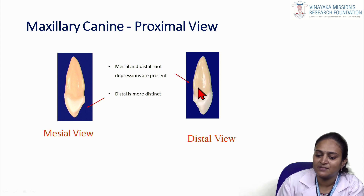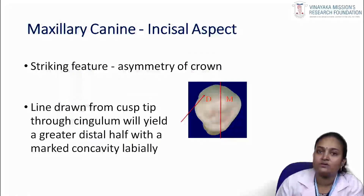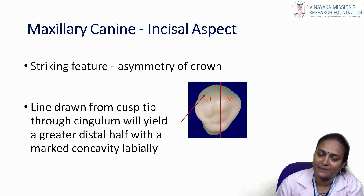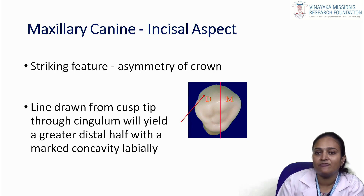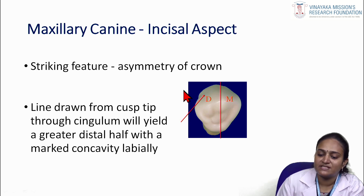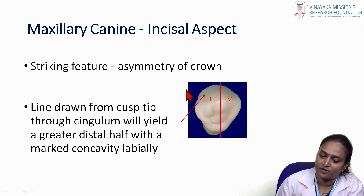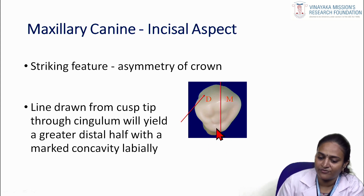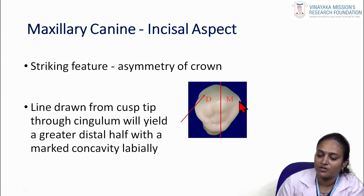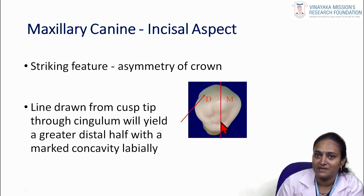From the incisal aspect of the maxillary canine, a striking feature is the asymmetry of the crown. The line drawn from the cusp tip through the lingual shows a greater distal offset, with marked concavity on the labial aspect. The distal area concavity is more pronounced than the mesial aspect.